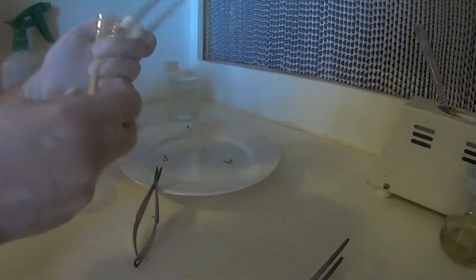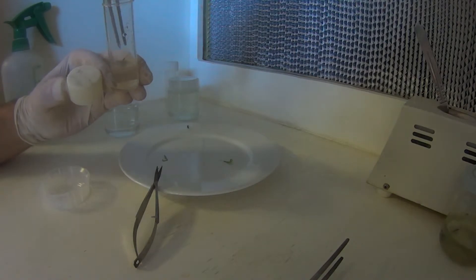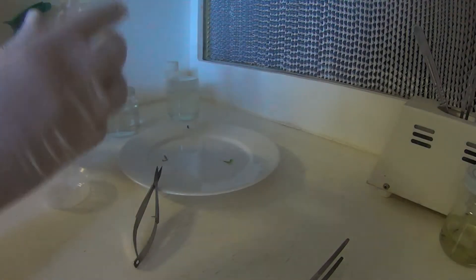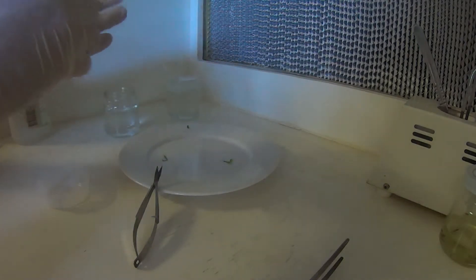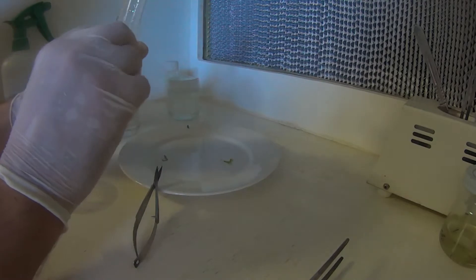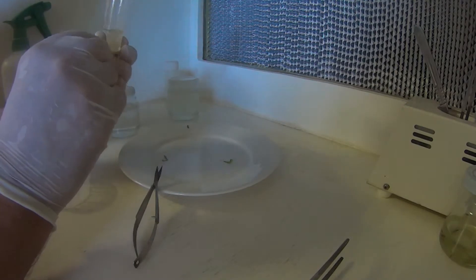Venus flytraps should start to callous up just in plain media. But you can also add some kinitin to the media to help them out a bit. So all I've done is placed him flat down in there. He should start to callous up and grow little Venus flytraps off it in a few weeks. You'll see some little lumps start to appear on it. Hopefully.